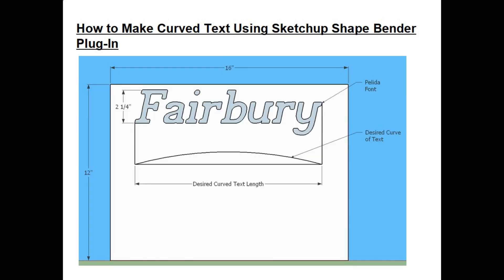Here's a typical example where you might want to make curved text. Let's say you're making a 12 inch by 16 inch sign, and the header word at the top you'd like to be two and a quarter inches tall, but you'd like it to be curved. We're going to run through this example to show you how to do it and how not to do it.